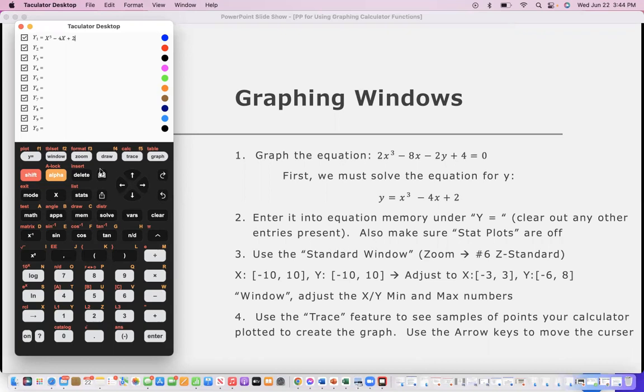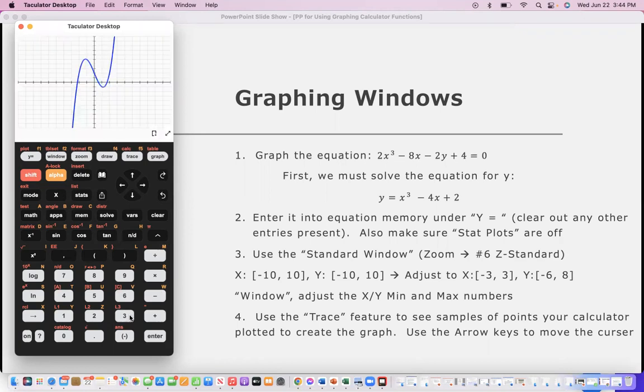We're using the standard window, which, as we saw earlier, is the negative 10 to 10. Under zoom, if you look at choice number 6, mine is a little bit different here because this doesn't have all the same features, but you want to look for z standard, which for me is choice number 3. That will automatically set it to that kind of a window. And here we have our graph.